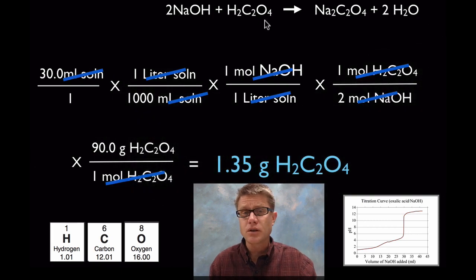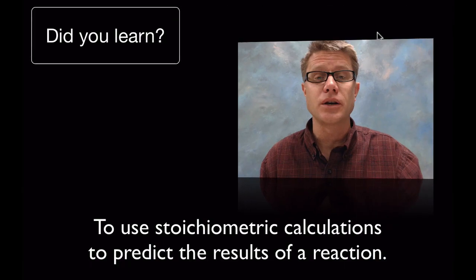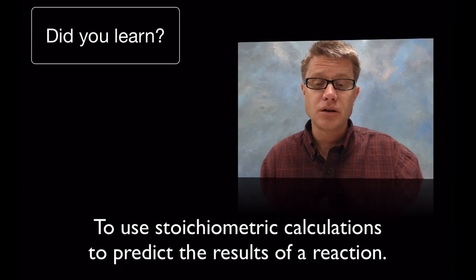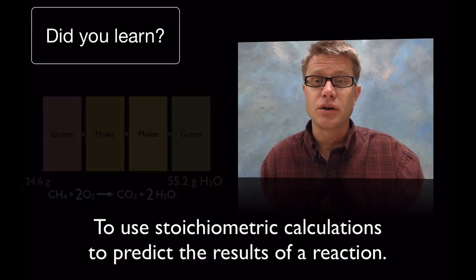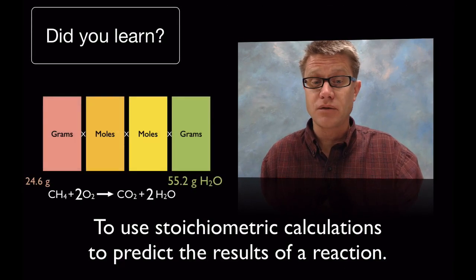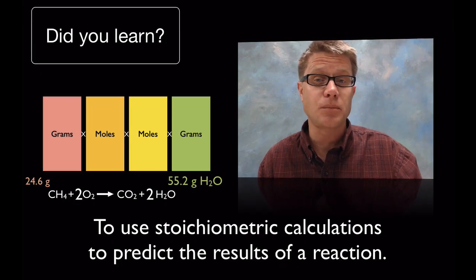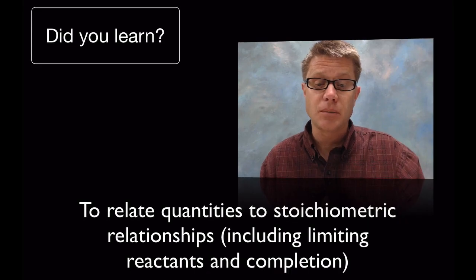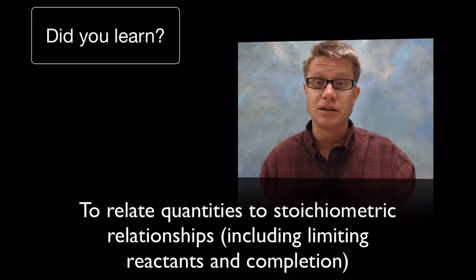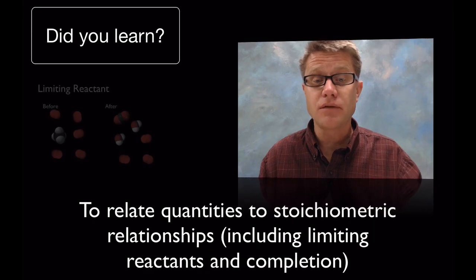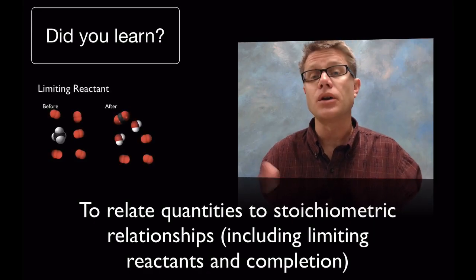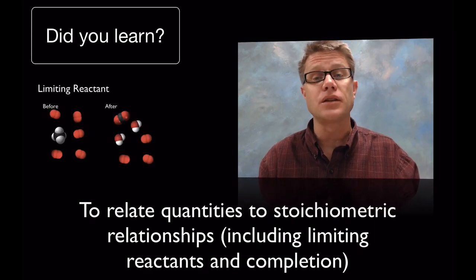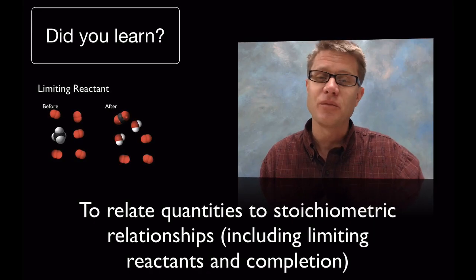So did you learn to use stoichiometry calculations to predict results of a reaction — that simple expected yield we calculated? And did you use stoichiometry relationships including limiting reactants — remembering that's when we don't have enough of a reactant — and going to completion, meaning whether the reaction goes all the way to the end? I hope that was helpful.